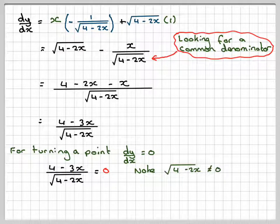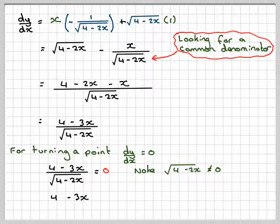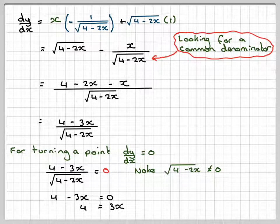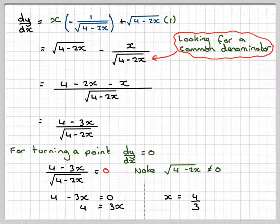So that means that 4 minus 3x is equal to 0, which gives that 4 is equal to 3x. x is equal to 4 over 3.